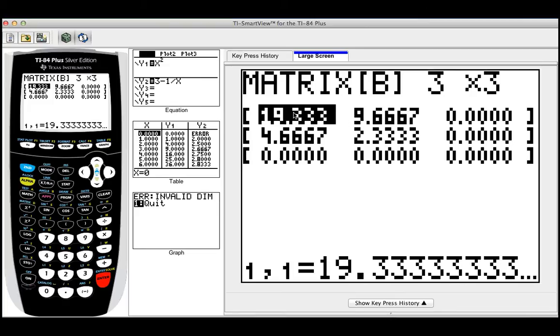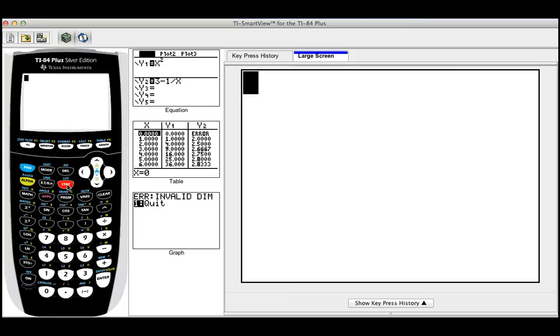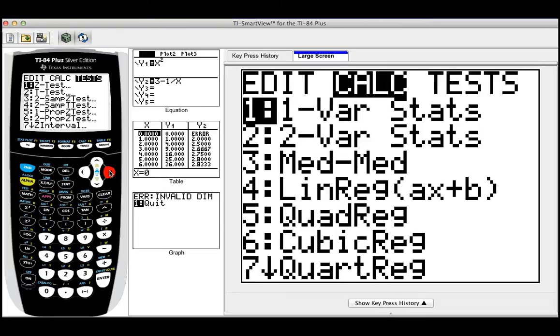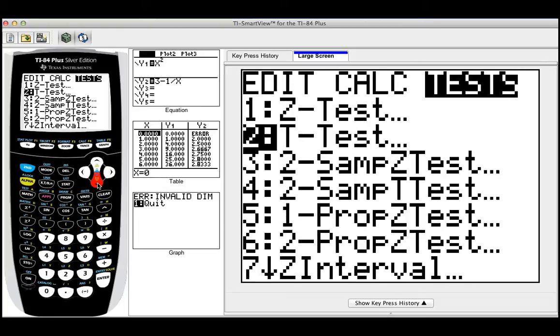It doesn't matter if you have numbers there, it will be deleted once you do the test. Now I can do second quit again to get out, and finally I'm going to do stats. Once you have your two matrices set up, you go to the test of the chi squared.